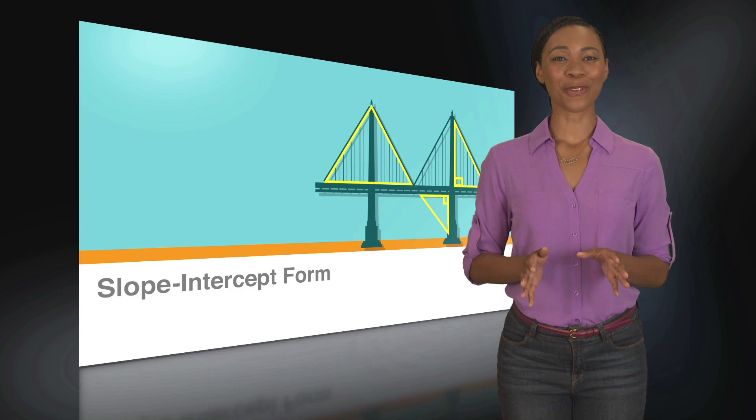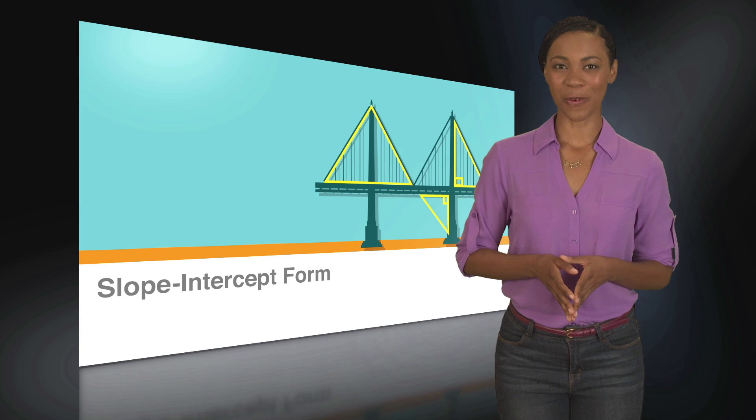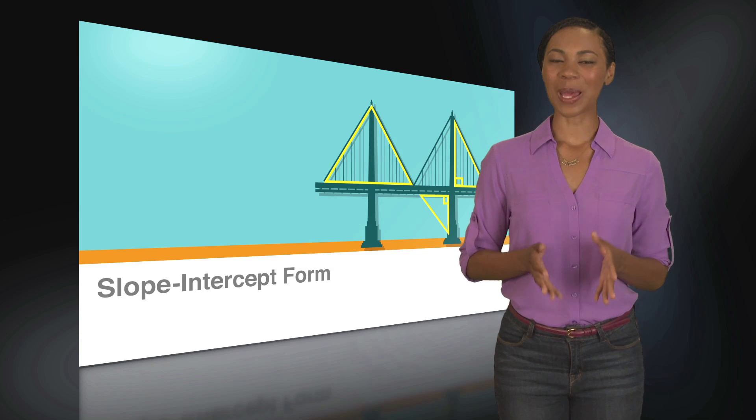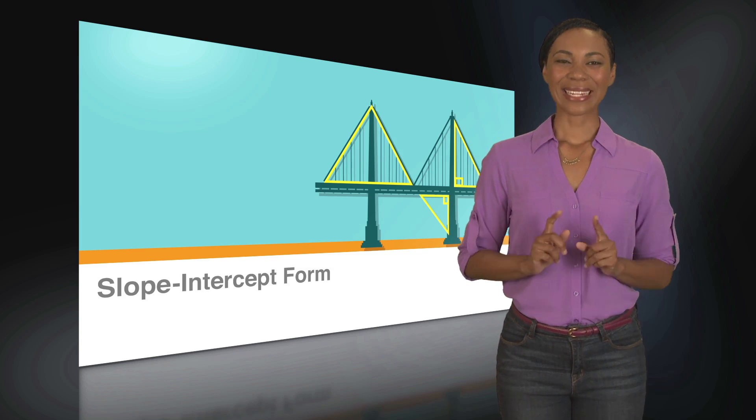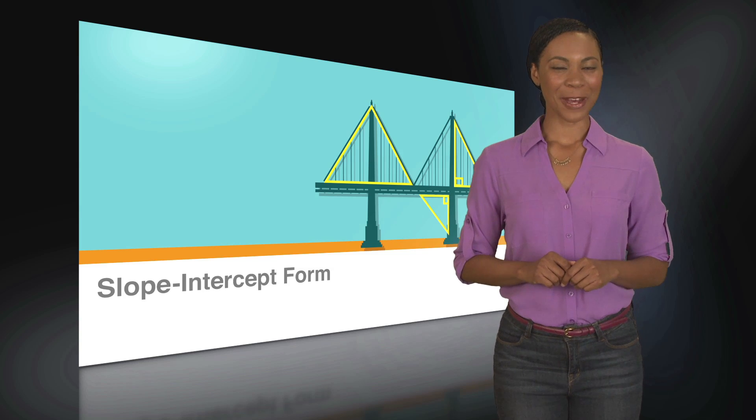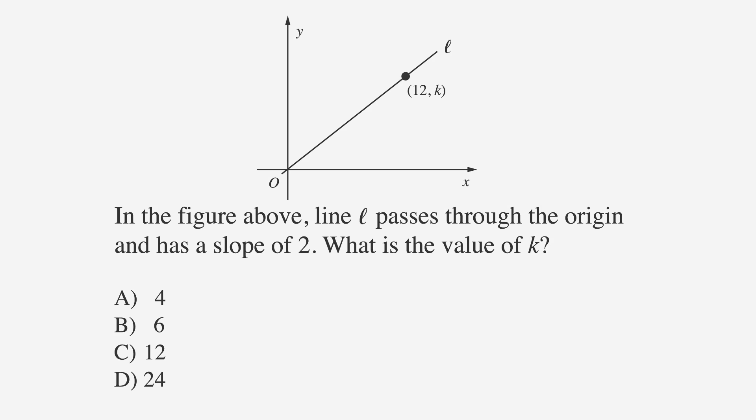That's a lot of useful information about slope-intercept form, as well as parallel and perpendicular lines. Let's apply some of our handy info in an example test problem. In the figure above, line L passes through the origin and has a slope of 2. What is the value of k?